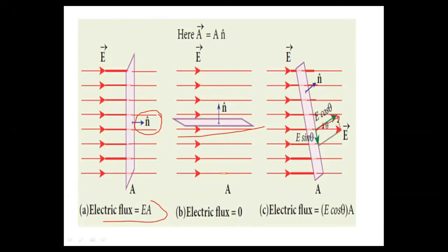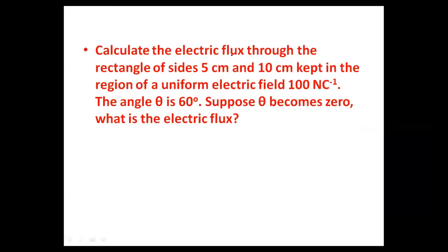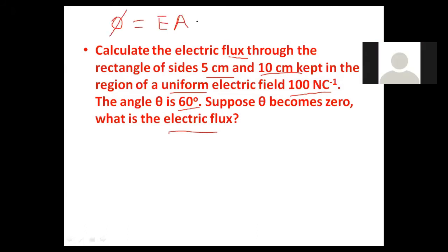Now let's calculate the electric flux through a rectangle of sides 5 centimeters and 10 centimeters kept in a region of uniform electric field of 100 Newton per coulomb. The angle theta is 60 degrees. Suppose theta becomes zero — what is the electric flux? What is the formula for electric flux? As discussed, flux phi is equal to E·cosθ·A.